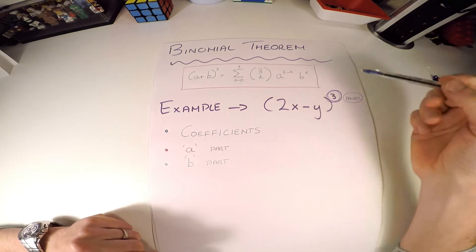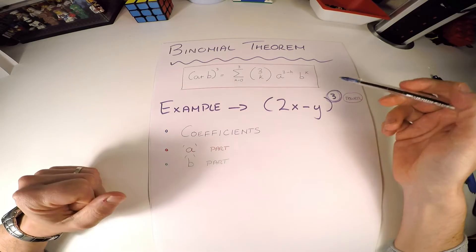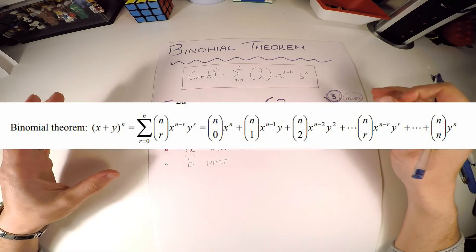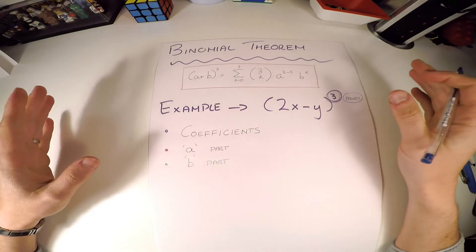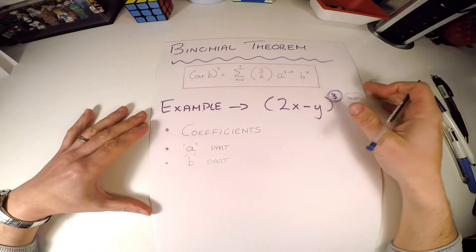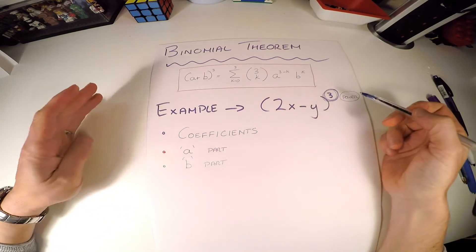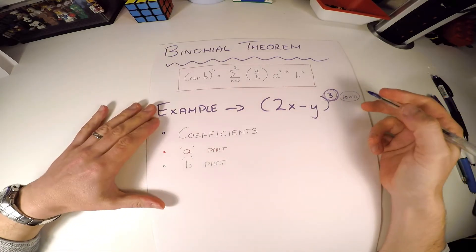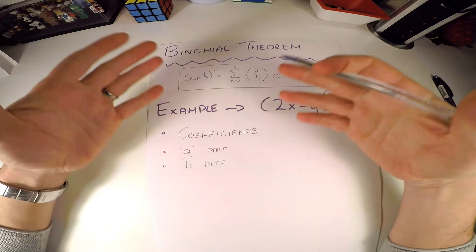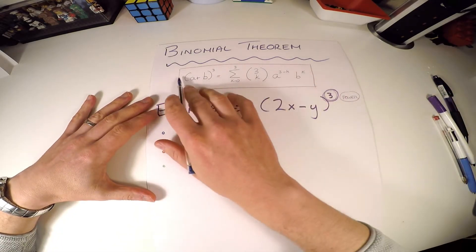This is a video on how to use the binomial theorem. It is given in the logbook, which looks something like this, but that is very difficult to understand. So we're going to learn a simple method on how to expand brackets using the binomial theorem — binomial expansion — and we're not going to concentrate on the formula itself, but I will explain it.